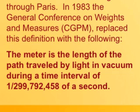Now we're basing distance on how far light travels in a very short amount of time. That's invariable — if you measure the distance from the North Pole to the equator, the Earth might change its shape over time and that distance could change slightly. But the distance light travels in the quoted time interval doesn't change: the speed of light is constant, regardless of what happens to the shape of the Earth.